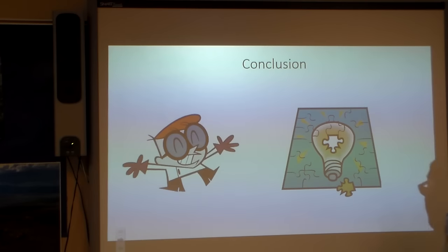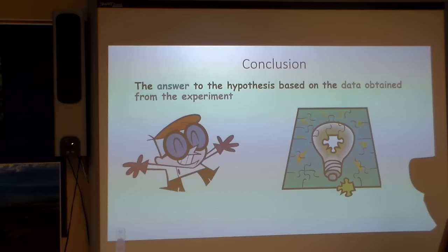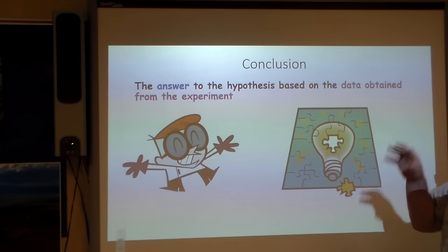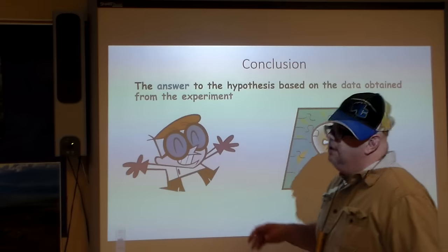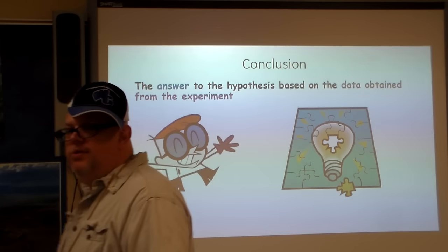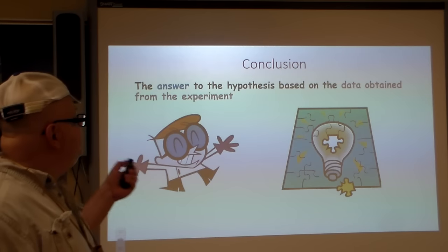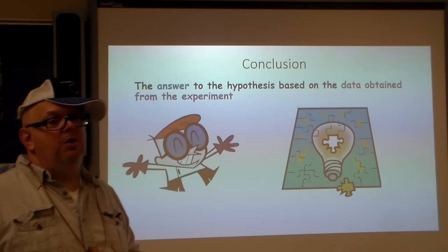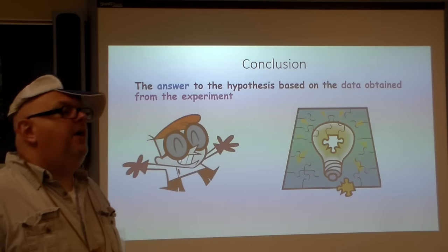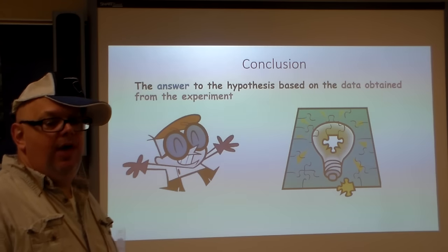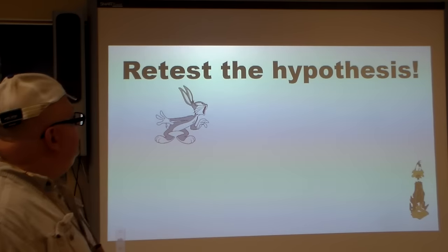Conclusion. Notice the happy little Dexter. The answer to the hypothesis is based on the data obtained from the experiment. The answer to our hypothesis, whether it is shown to be correct or incorrect, is going to be based on the data that we got from the experiment. That's a key thing. Without the data, we can't do anything with the hypothesis.